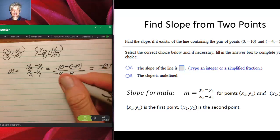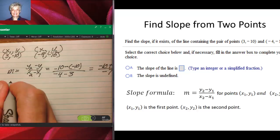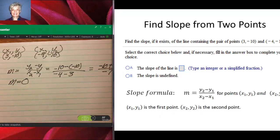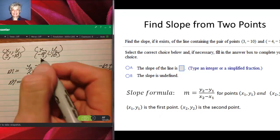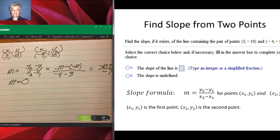-4 minus 3 is -7. So we're going to have 0 over -7, which will equal 0. So m equals 0. We have a horizontal line here. If you were to plot these two points and draw a line through them, you would have a horizontal line. Horizontal lines all have zero slopes.